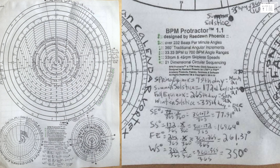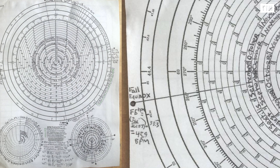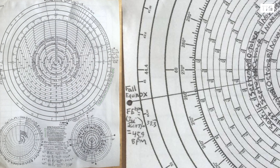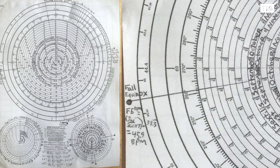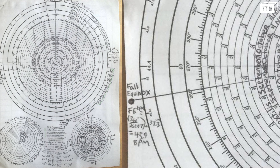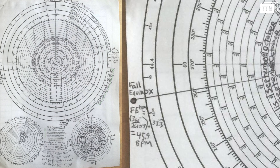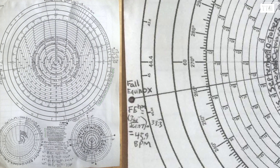Answer 3: To solve for the fall equinox that falls on the 265th day, we apply the same equations. Fall equinox degrees equals 360 degrees times 265 days divided by 365 days, equals 261.37 degrees. Fall equinox BPM equals 360 degrees divided by 261.37 degrees, times 33.33, equals 45.9 BPM.